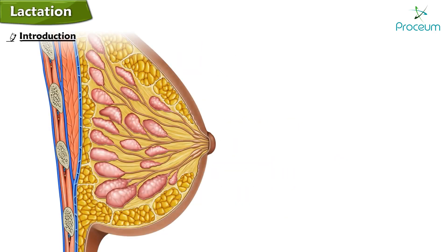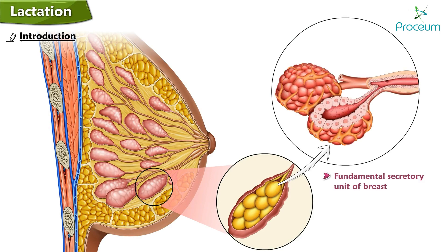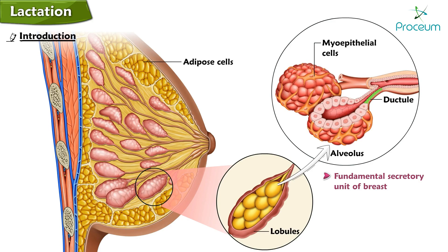The fundamental secretory unit of the breast is the alveolus, which is surrounded by contractile myoepithelial cells and adipose cells. These alveoli are organized into lobules, each of which drains into a ductule. A group of 15 to 20 ductules drain into a duct which widens at the ampulla, forming a small reservoir.